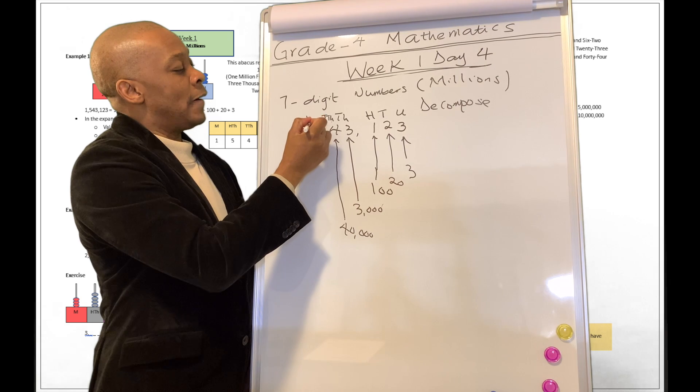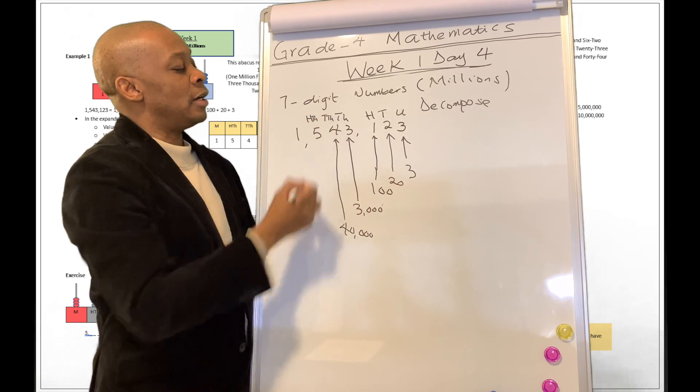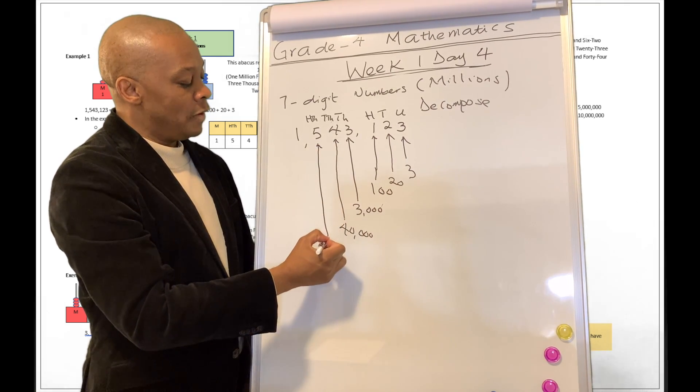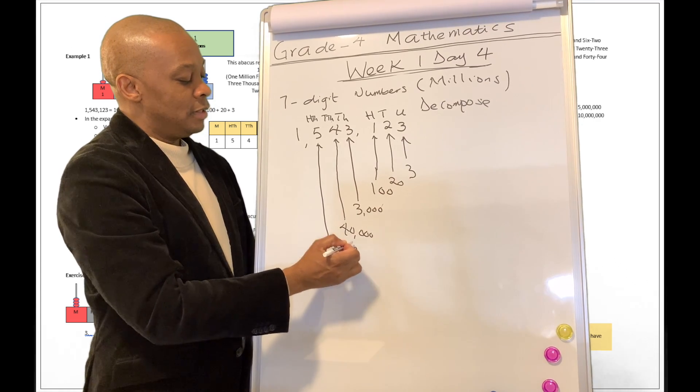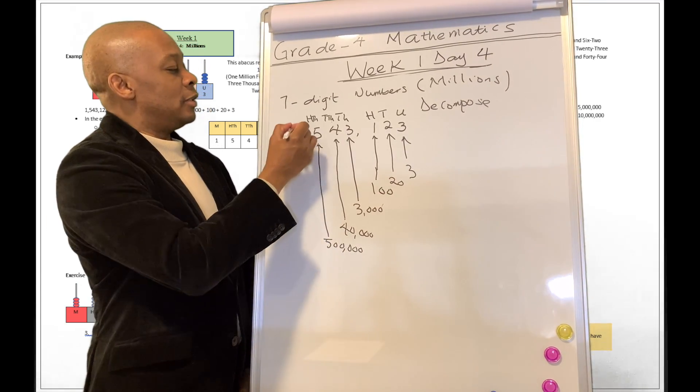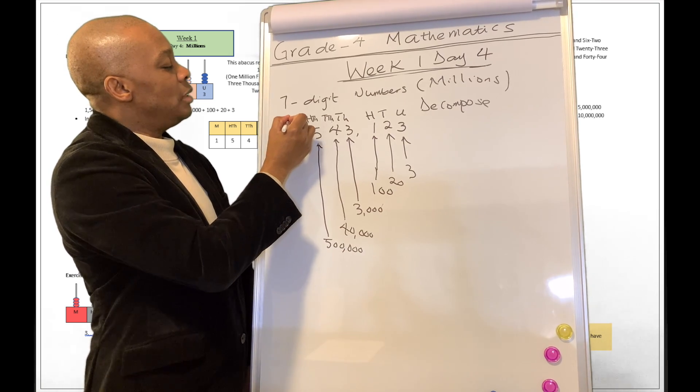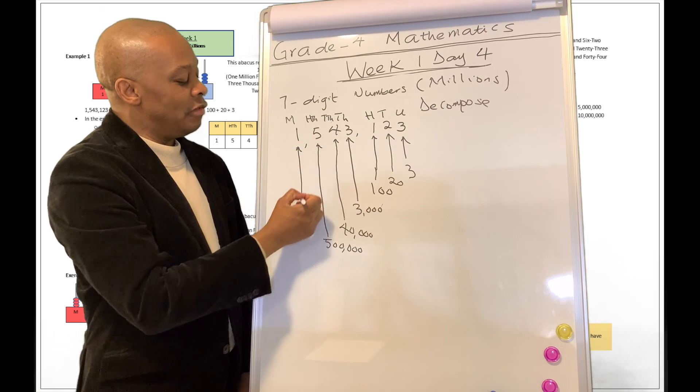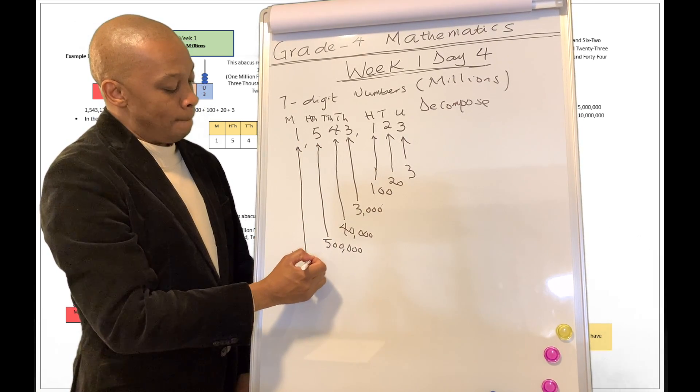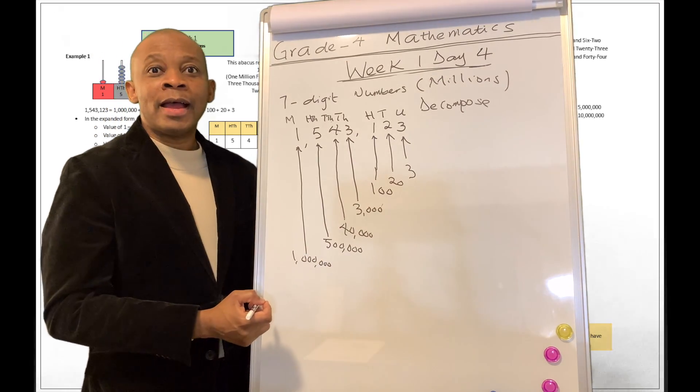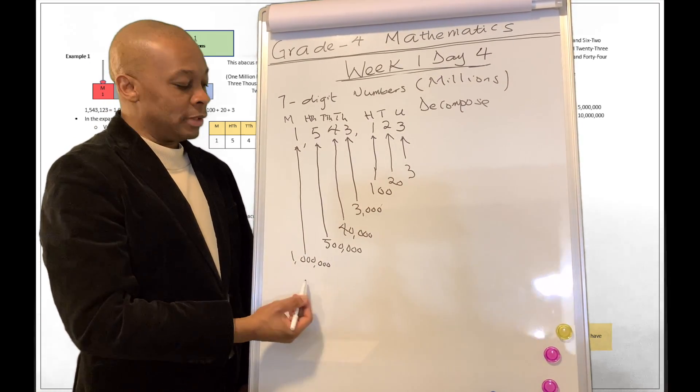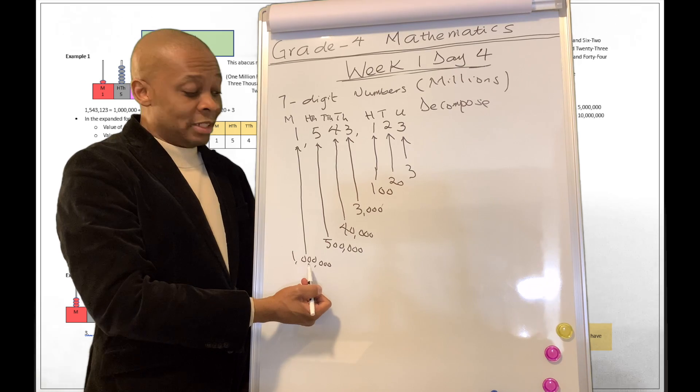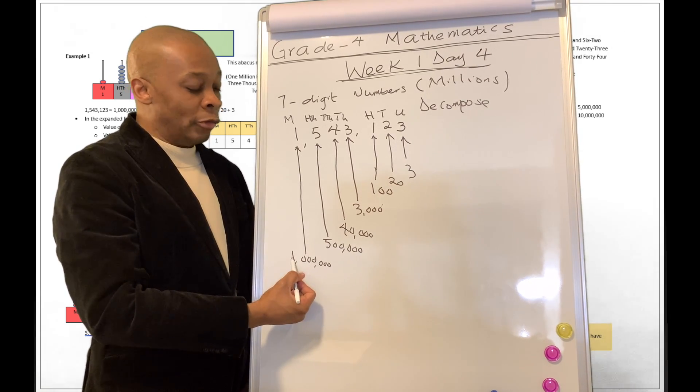Now, over here, we are in the 100s of 1000s category. And this 5 over here is going to have a value of 500,000. And this one right now is going to be in the millions category. This is the millions right now. And this is going to have a value of 1 million. So that's how you write your 1 million. You're going to count three digits from the right, put a comma, count another three digits from the right, put another comma, and then you have 1 million.